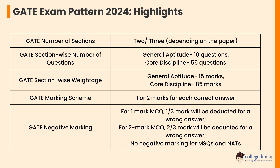The General Aptitude section in GATE exams carries a weightage of 15 marks, while the remaining 85 marks are for core discipline and related topics. Each question carries one or two marks for a total weightage of 100 marks. For one-mark MCQs, one-third mark will be deducted for a wrong answer. For two-mark MCQs, two-thirds mark will be deducted. There is no negative marking for MSQ and NAT questions.